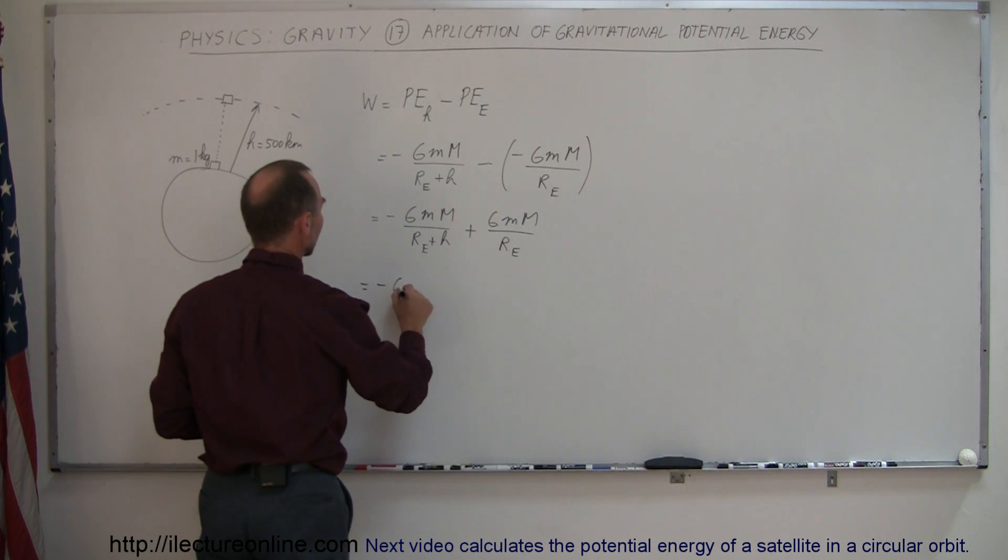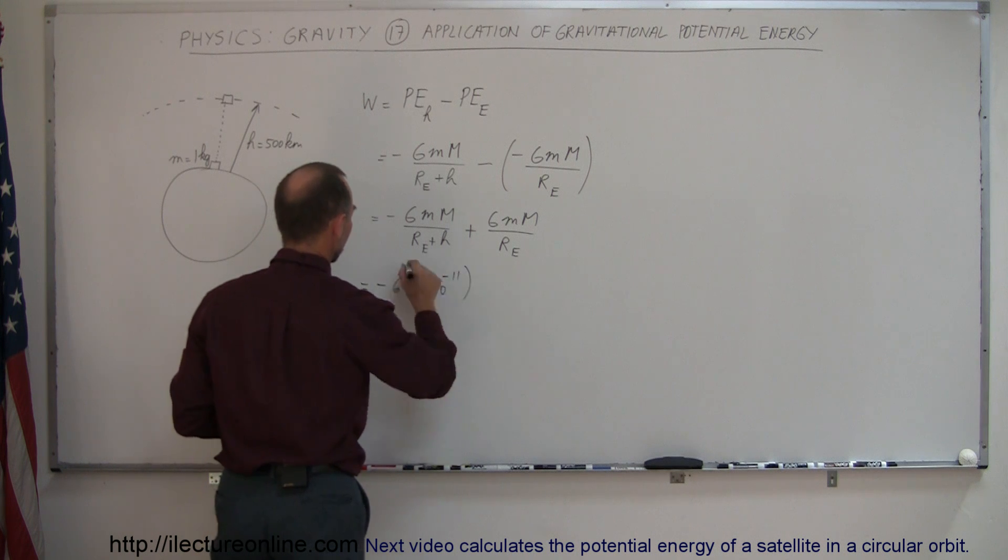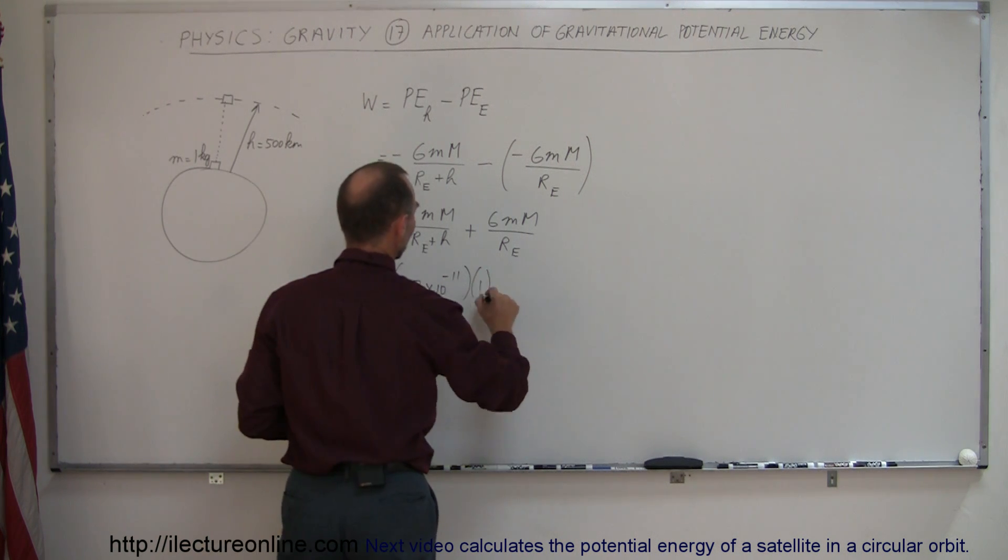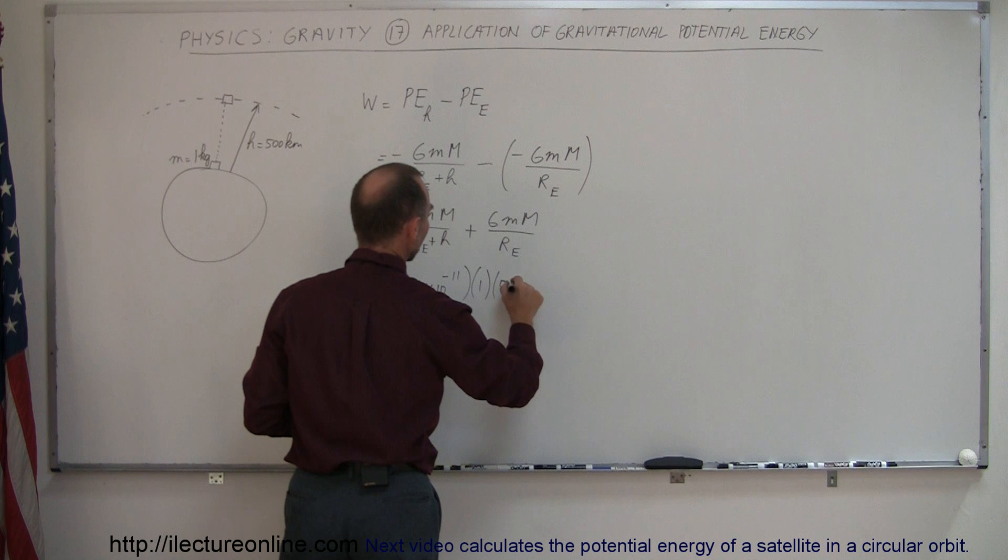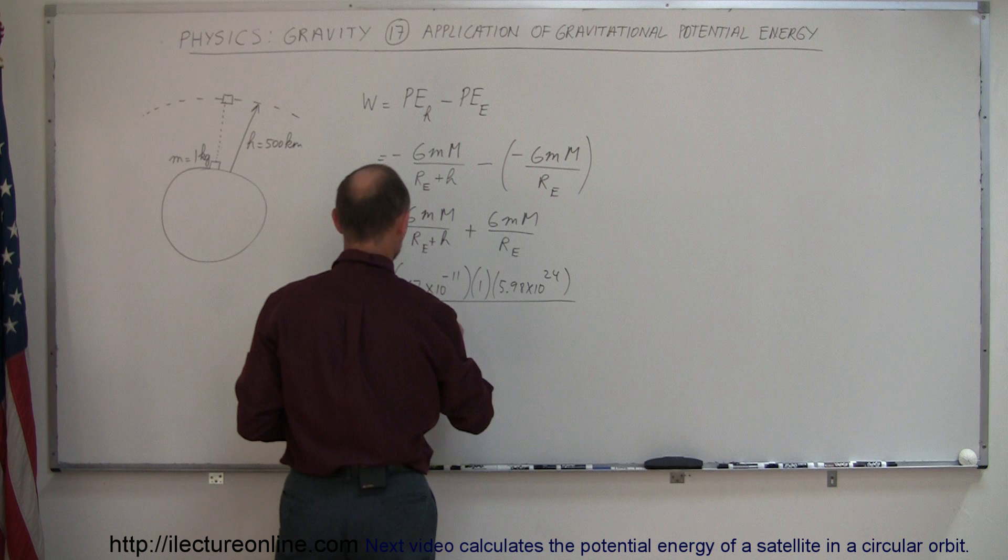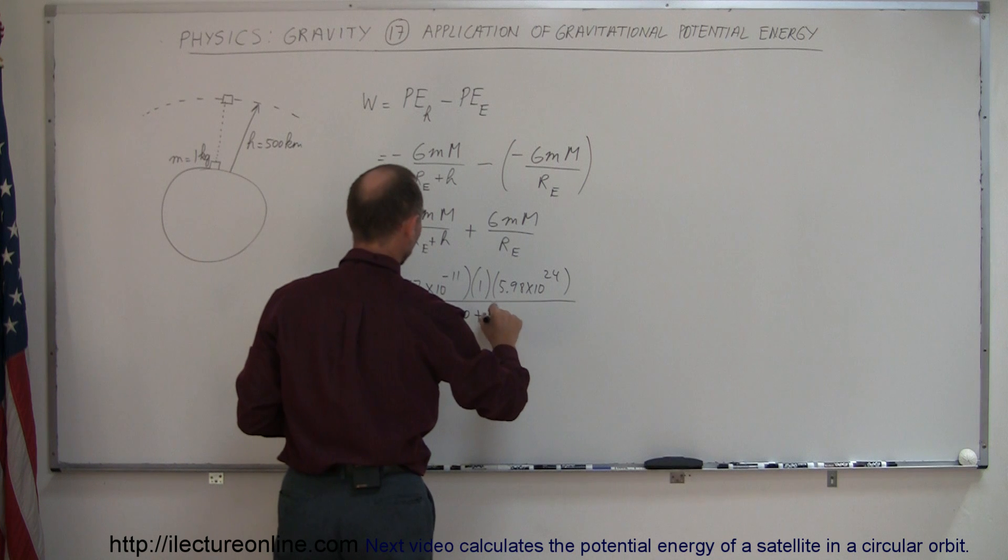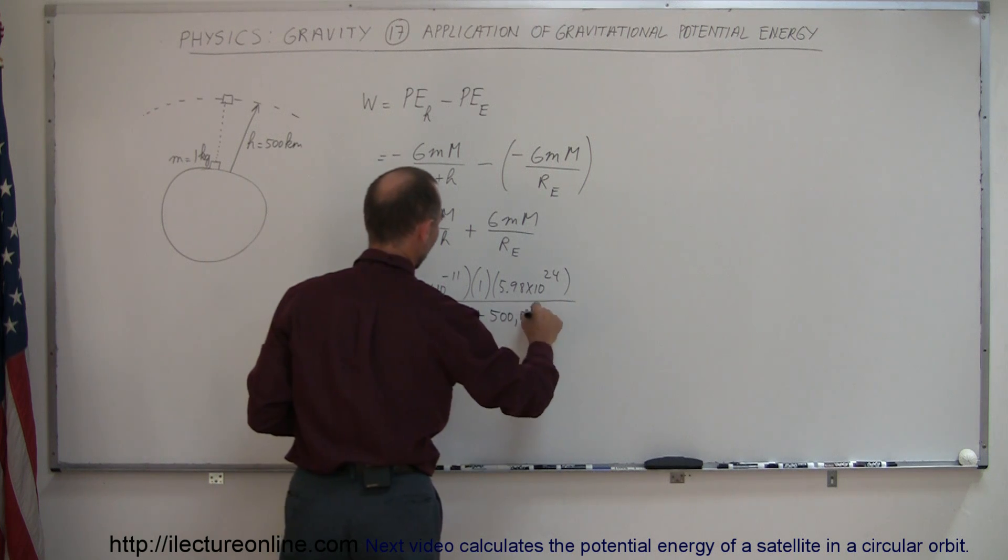So this is equal to minus 6.67 times 10 to the minus 11, multiply times the mass which is 1, mass of the Earth 5.98 times 10 to the 24th, all divided by the radius of the Earth plus H. That would be 6,378,000 plus 500,000.